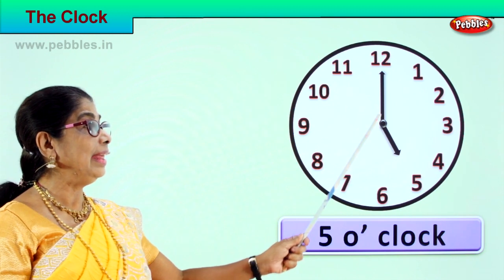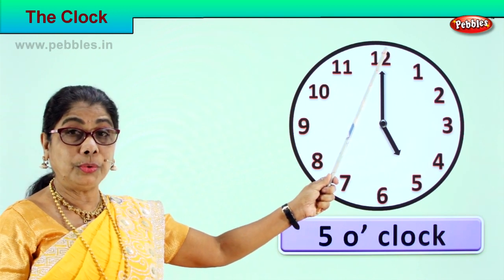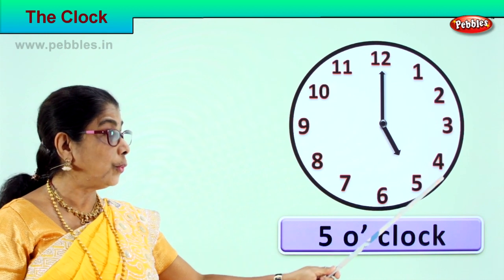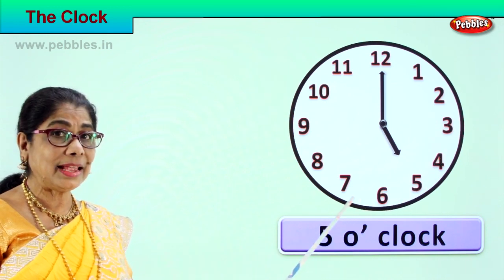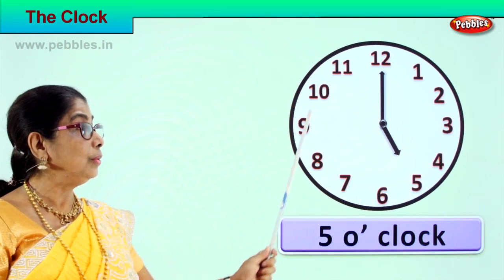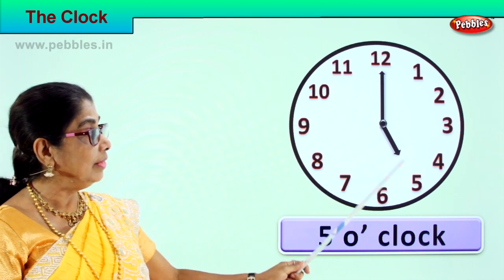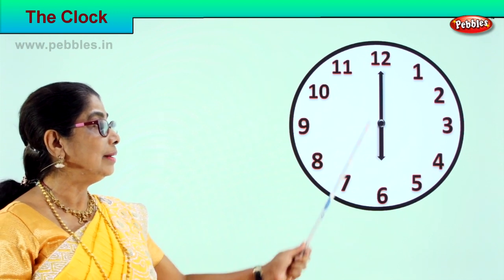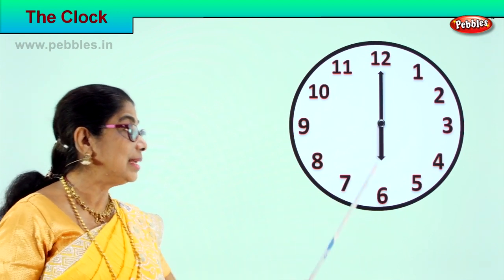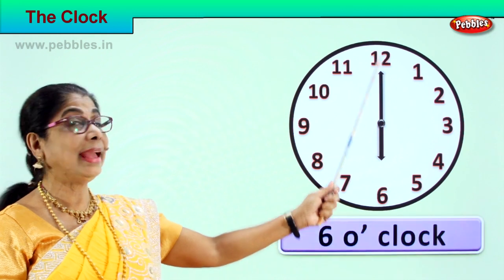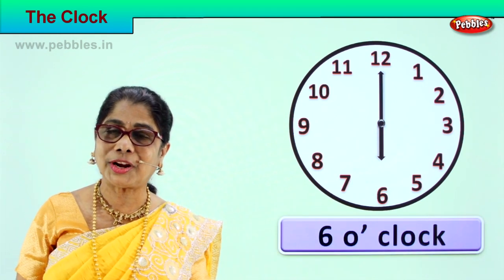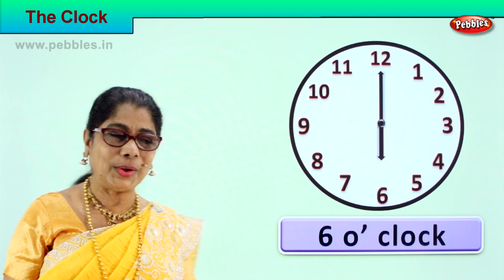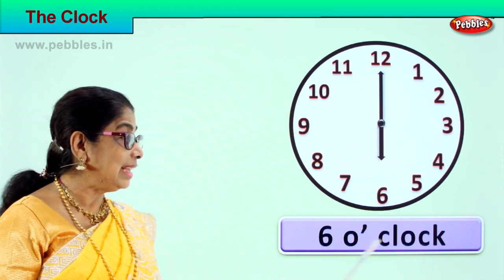Now the minute hand goes from one to two, three, four, five, six, seven, eight and it goes on and comes back to twelve. The hour hand shifts from five to six. Now how do we read the time? The hour hand is on six and the minute hand is on twelve. Look at the position of the clock — we read it as six o'clock.